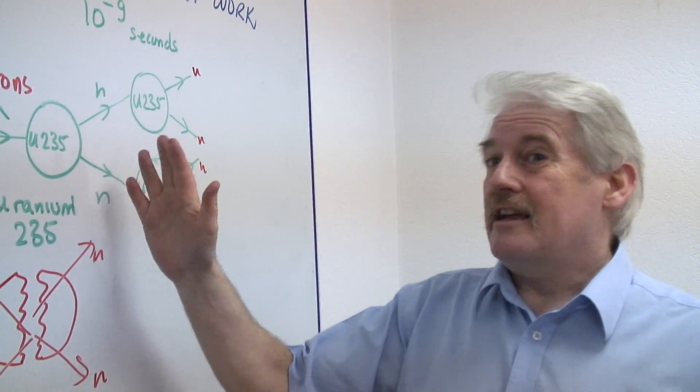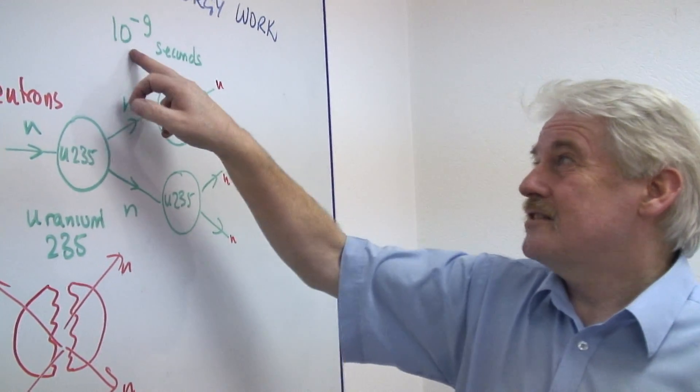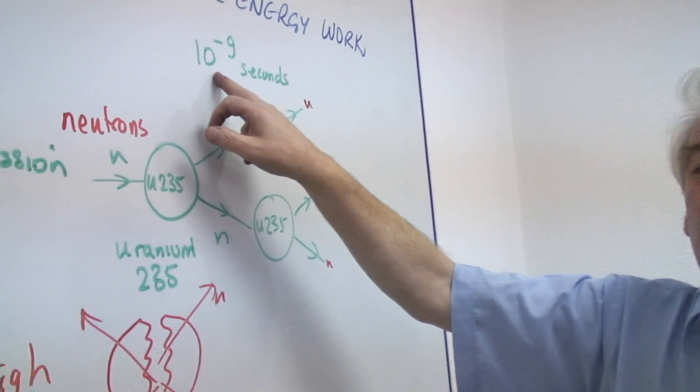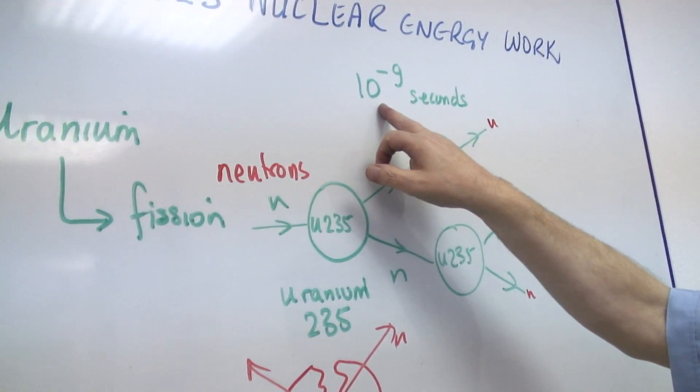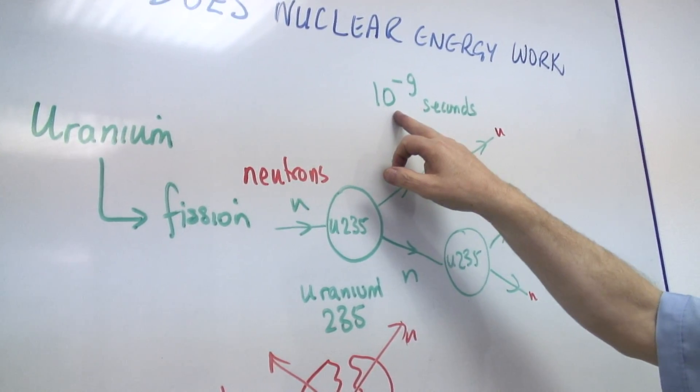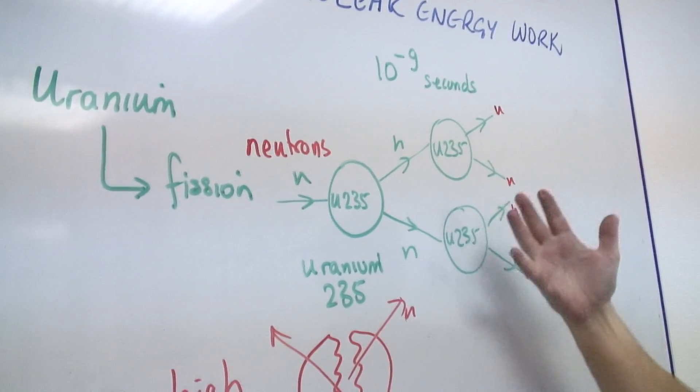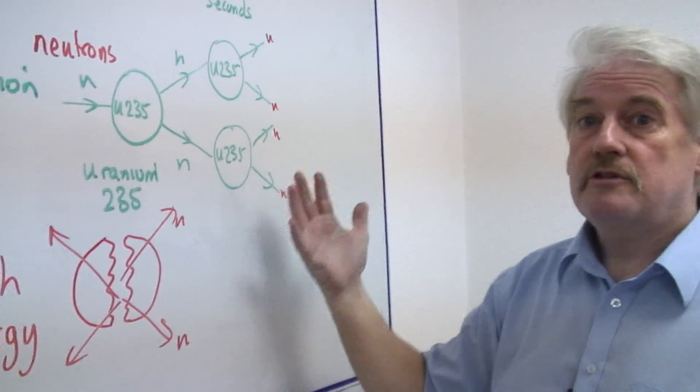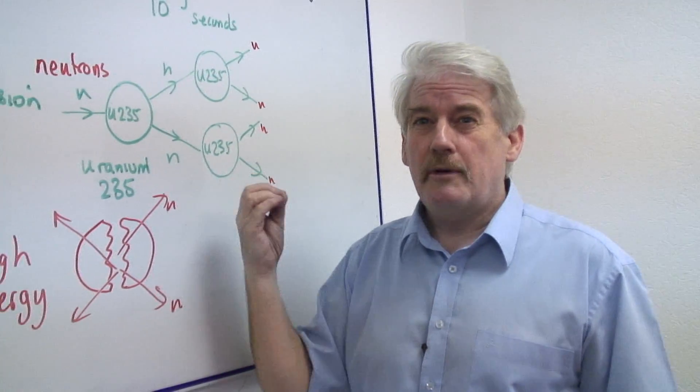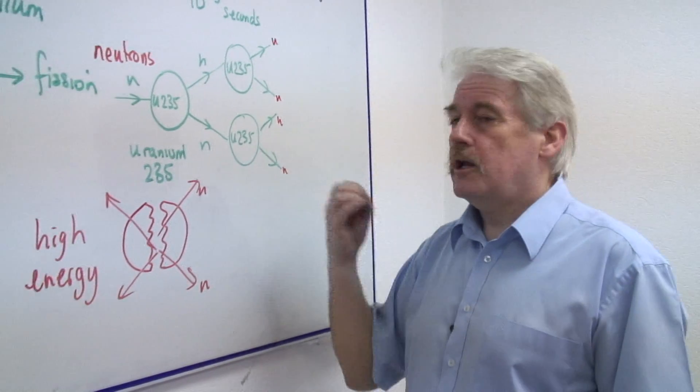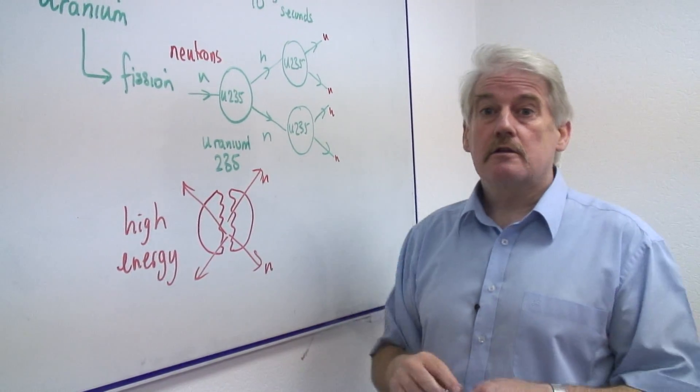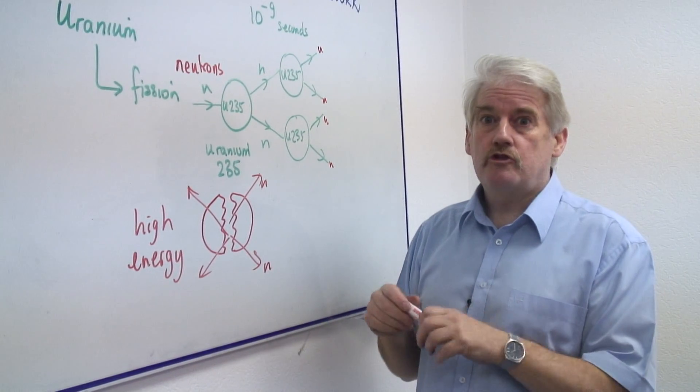This process takes ten to the minus nine seconds. That's one thousand millionth of a second. And you can imagine these processes each time you're getting a doubling of the numbers involved. You get a huge amount of energy very, very quickly. Instantaneously almost. So you get a massive explosion.